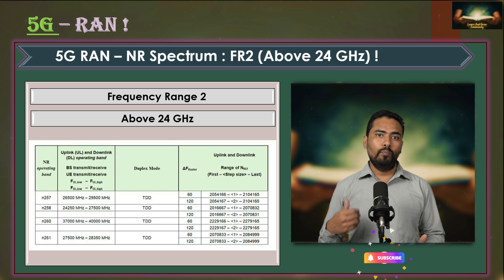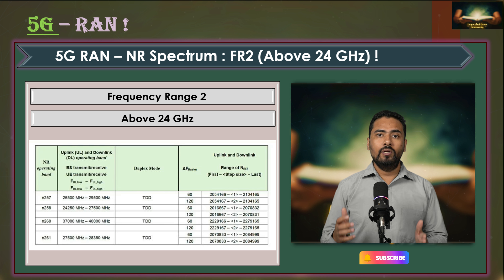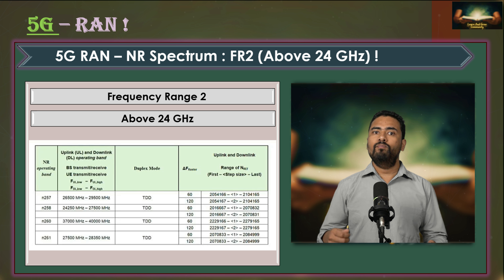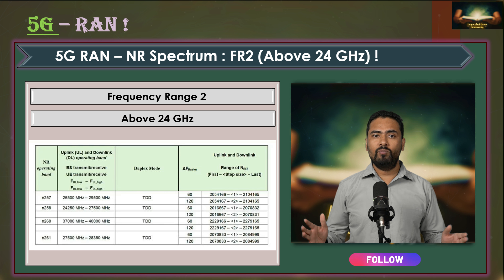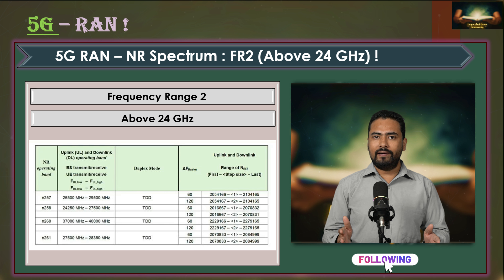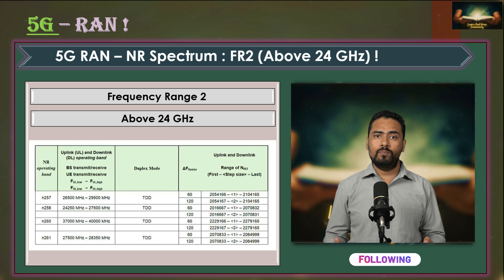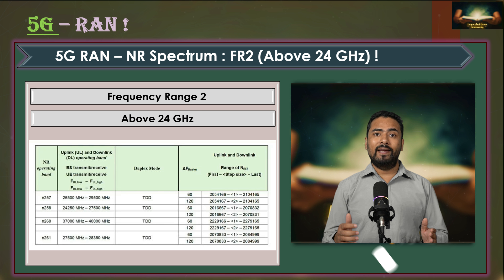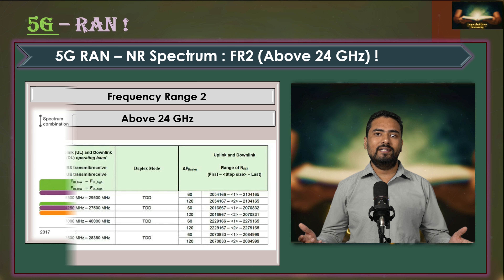However, FR2 bands have fewer penetrations through obstacles like walls and buildings, but they can offer larger bandwidth. These characteristics make them suitable for high density locations and hotspots such as city centers and stadiums.